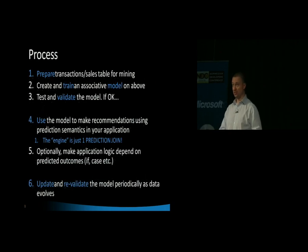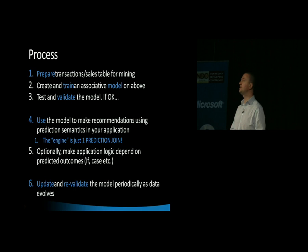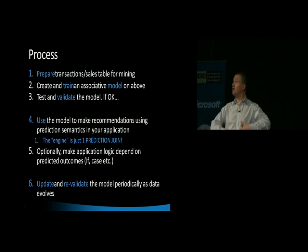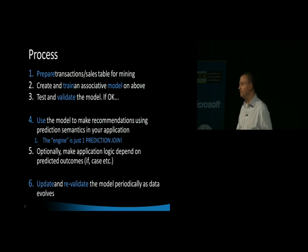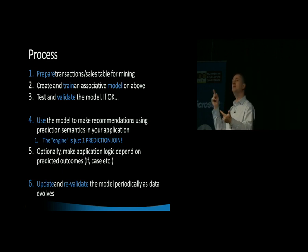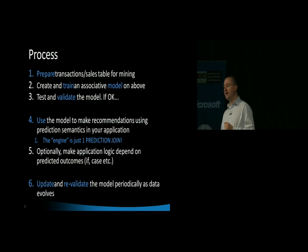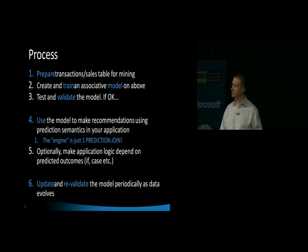Let me introduce the process. Step one: prepare your transactions — your historical database representing whatever happened, for example receipts from sales in a supermarket, or recommendations for experiences, demographic recommendations, and so on. Whatever the data is, you need to prepare it for mining, which typically means cleansing, flattening, and denormalizing. Then you create and train an associative model using association rules.